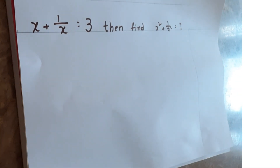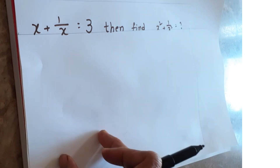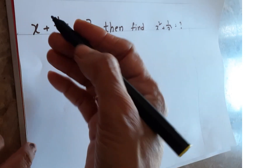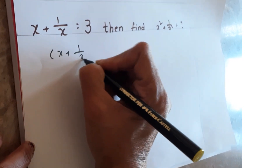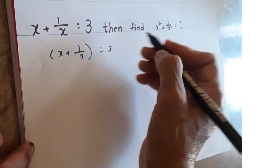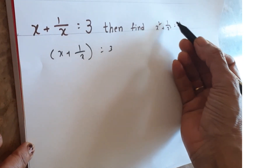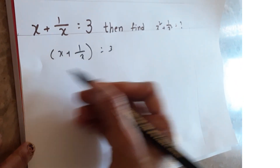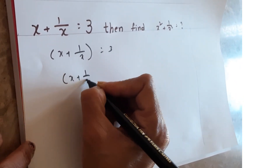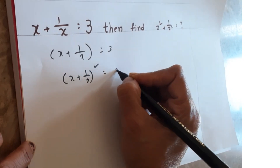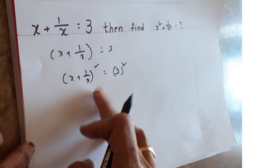Normally, we use the identity (a + b)² formula. I'll show you the long method first, then I'll tell you the trick. Given x + 1/x = 3, to find x² + 1/x², you square both sides: (x + 1/x)² = 3².